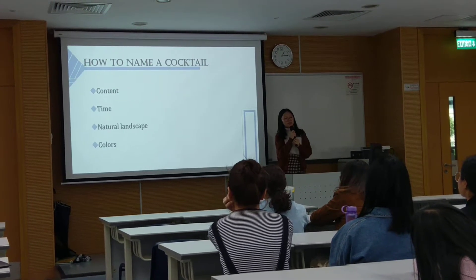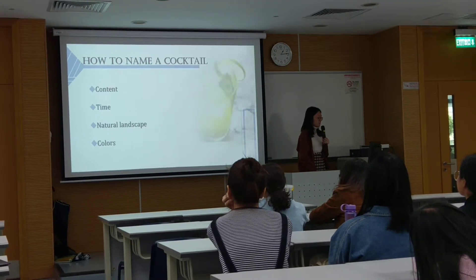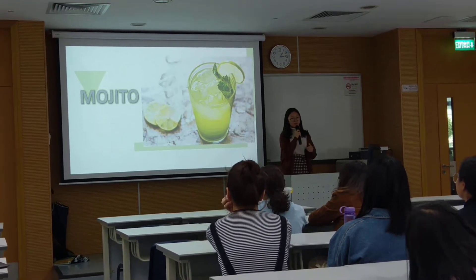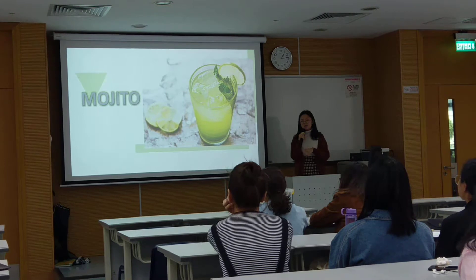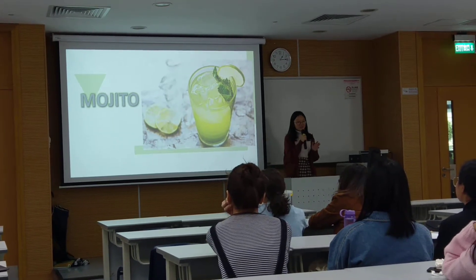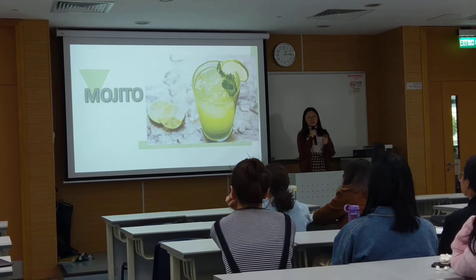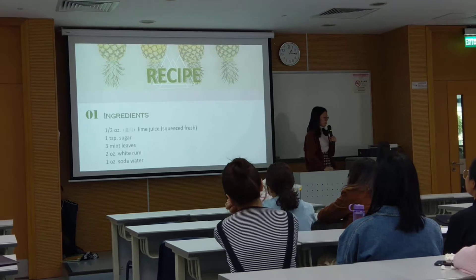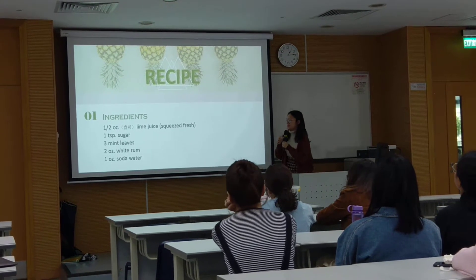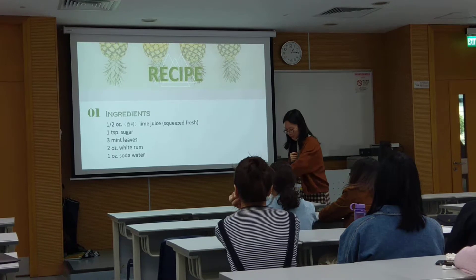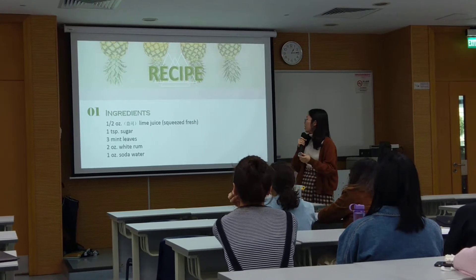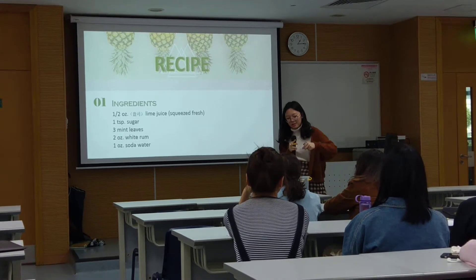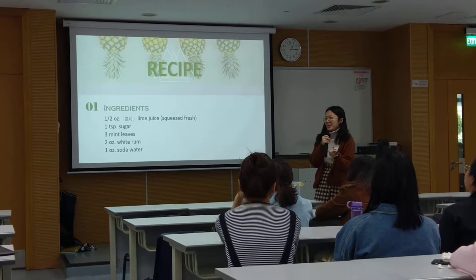After introducing these basic things to you, I'm going to show you the first kind of cocktail: the mojito. The mojito became one of the most famous cocktails in the recent 15 years. People will always be amazed by its flavor because of the mint leaves inside it. But because I cannot buy fresh mint in Macau, I'm going to show you the recipe instead. To make a mojito, you need half an ounce of lime juice, one teaspoon of sugar, and three mint leaves.